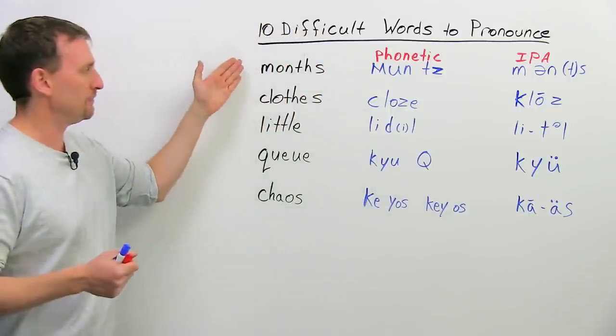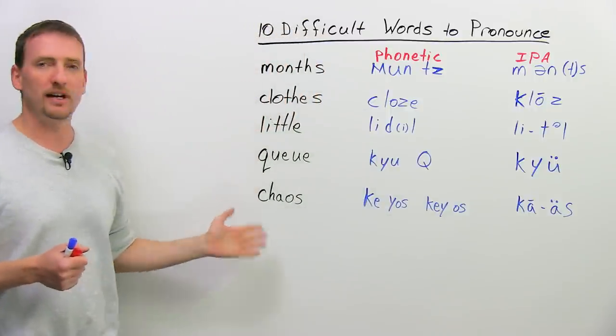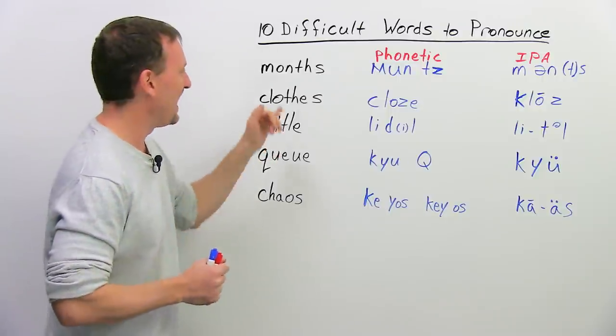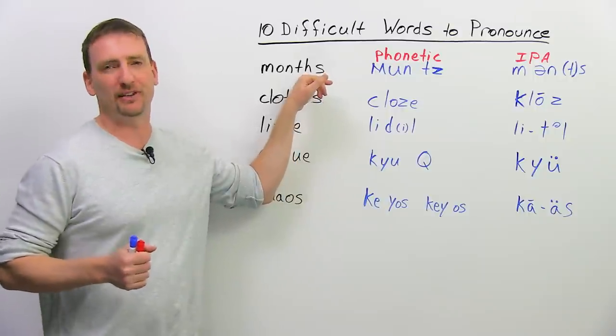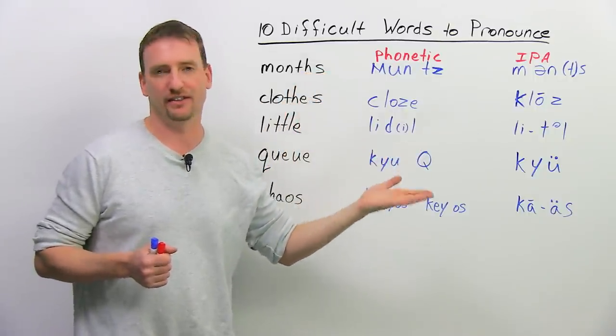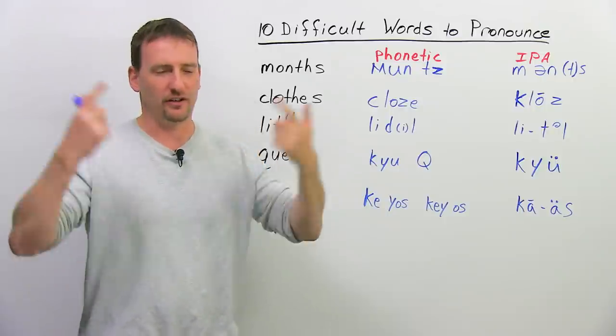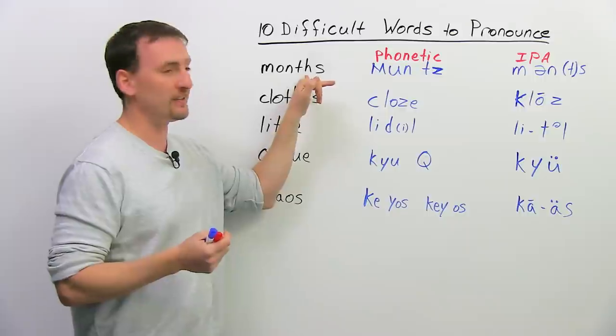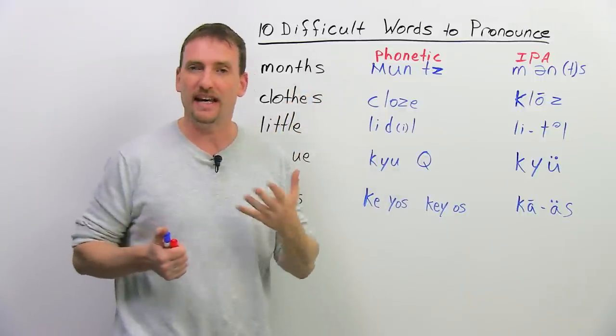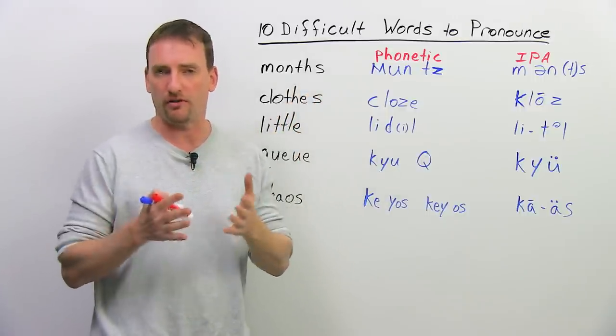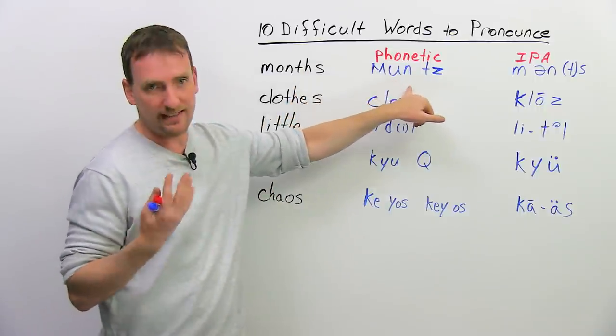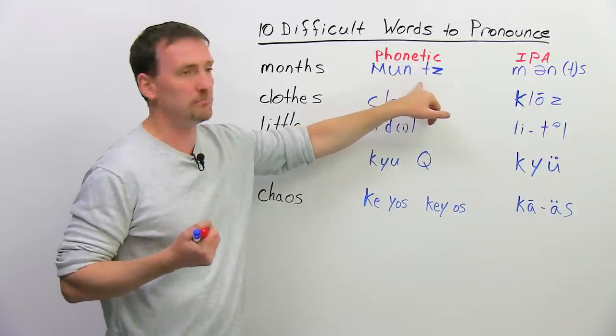So, we're going to look at months, clothes, little, queue, chaos. So you already heard me saying them, but I'll go through each one carefully. A lot of people try to pronounce the th in this word, months. You're just confusing your tongue, you're confusing your listener. Don't try to always put ths, they don't always work. Even native speakers don't bother trying to separate the sounds.